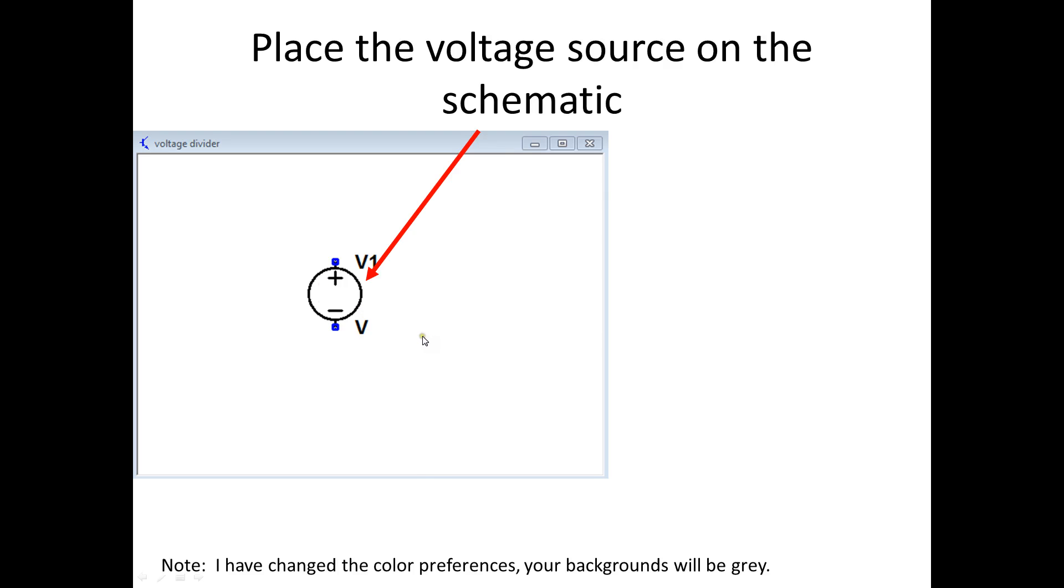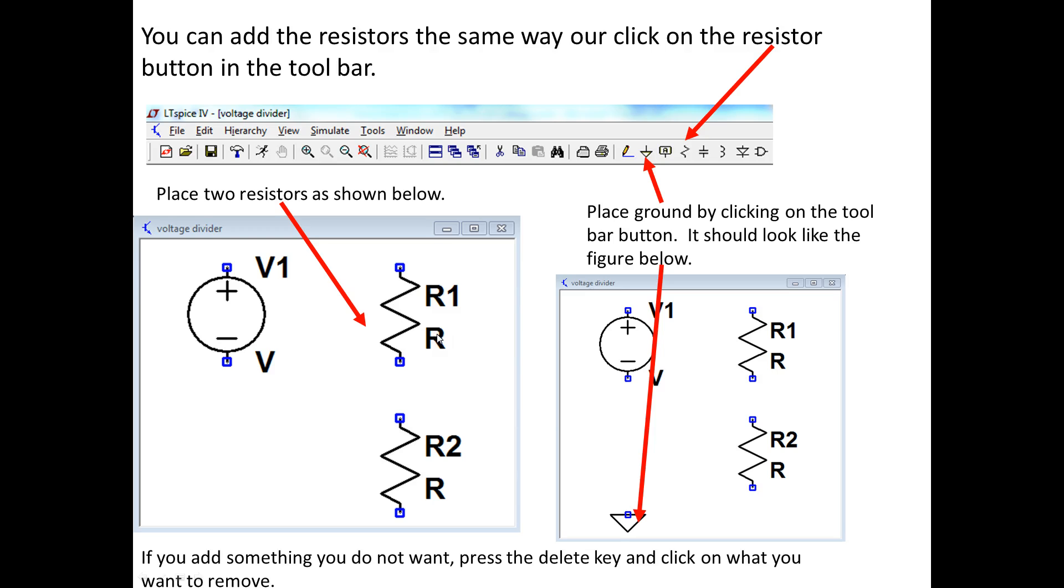When you're using it, it should start up with gray background. Now we need to add some other components for our voltage divider. There's a shortcut for resistors right here in the toolbar, and you can click there and place your resistors. They're automatically numbered R1, R2, and they are not given a default value when you put them down.